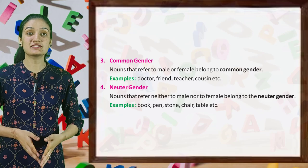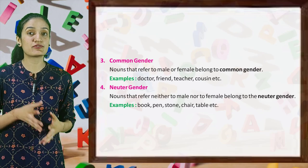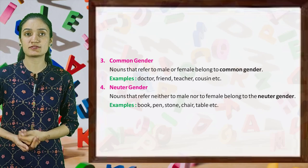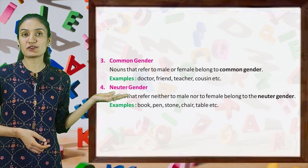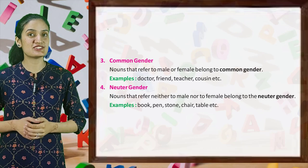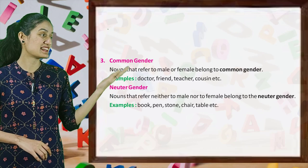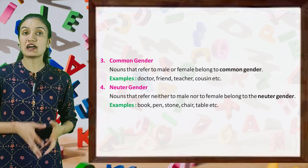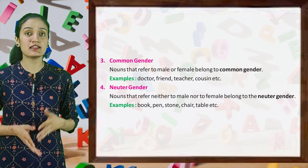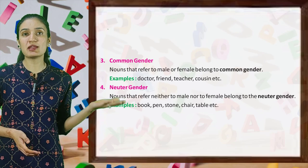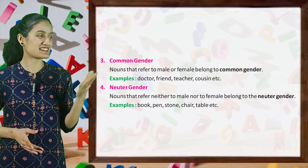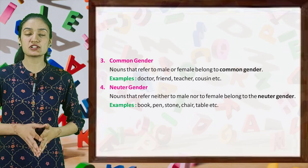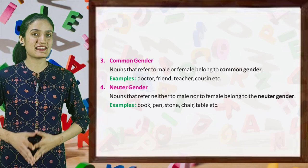Common gender: nouns that refer to male or female belong to the common gender. Examples: doctor, friend, teacher, cousin, etc. Next is neuter gender. Nouns that refer neither to male nor to female belong to the neuter gender. Examples: book, pen, stone, chair, table, etc.